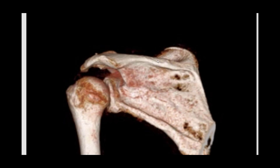The supraspinatus muscle, as it comes in and inserts from above onto the greater tubercle, is going to help initiate abduction of the arm, pulling it outward.